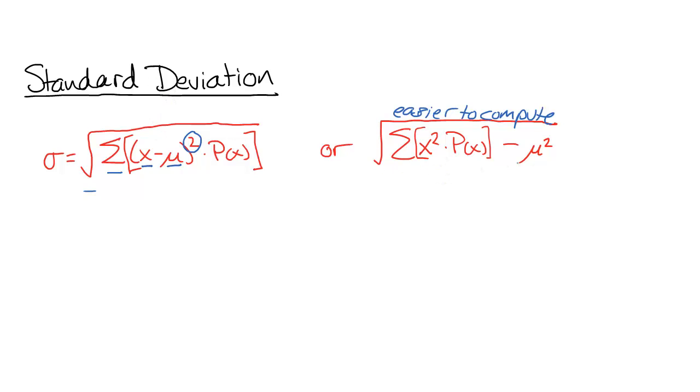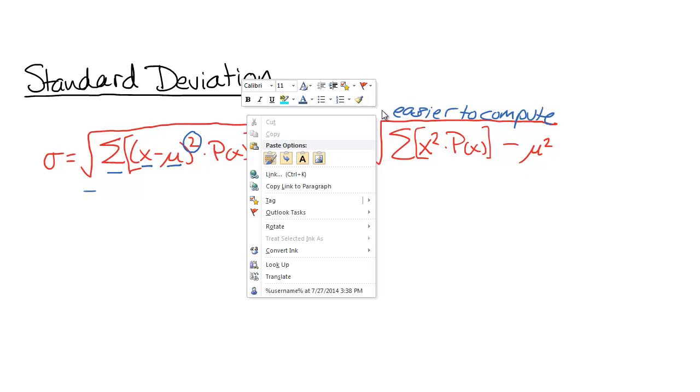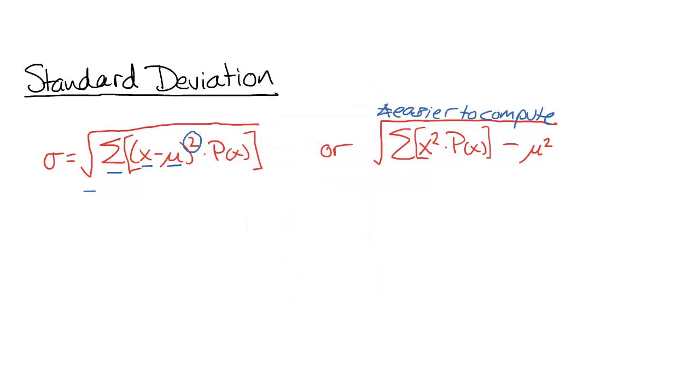This second one is just an alternate form of the formula. And this one's a little bit easier to compute. So if you're computing a standard deviation in this section, I would recommend just using this one. But it doesn't really matter. So to parse this formula, we're going to add up each of the values squared times its probability. And then once we've added all those up, we're going to subtract the mean squared, the mean that we computed just a second ago, and then finally take a square root.